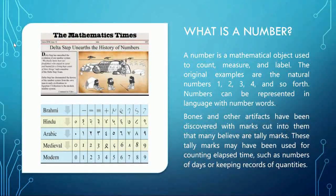What is a number? A number is a mathematical object used to count, measure, and label. The original examples are the natural numbers: 1, 2, 3, 4, and so forth. Numbers can be represented in language with number words. Bones and other artifacts have been discovered with marks cut into them that many believe are tally marks, which may have been used for counting elapsed time or keeping records of quantities.